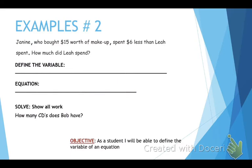We're going to do example number two. Janine, who bought $15 worth of makeup, spent $6 less than Leah spent. How much did Leah spend? So the first thing is, what do I not know? What's the unknown thing? Because I need to figure out what my variable is. Well, I don't know how much money Leah spent. So I need to create a variable for that. I could use x. I can use l. I'm not going to use l because it looks like a one. So I'm just going to use x. So x is equal to the amount of money Leah spent on makeup.